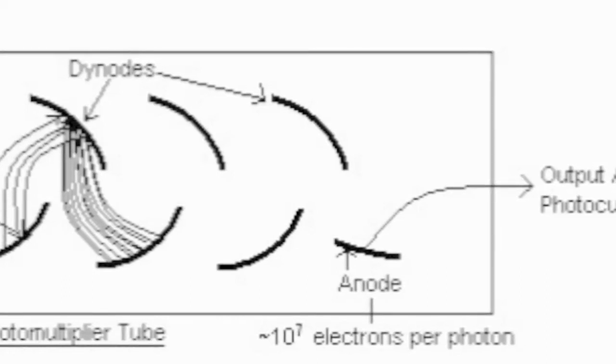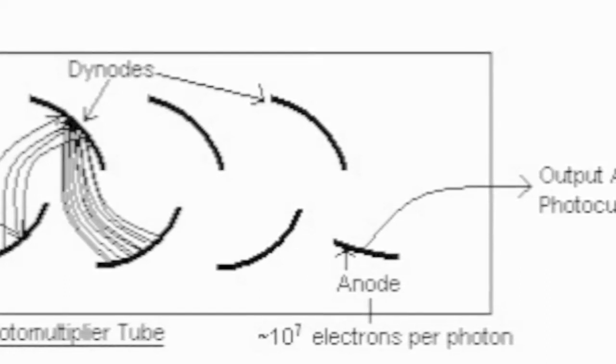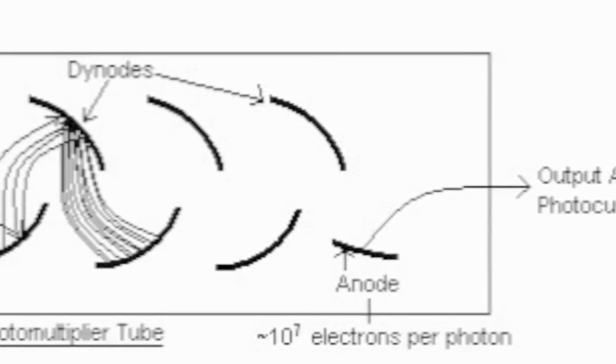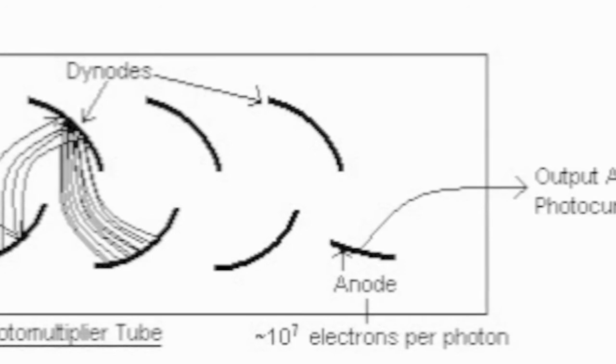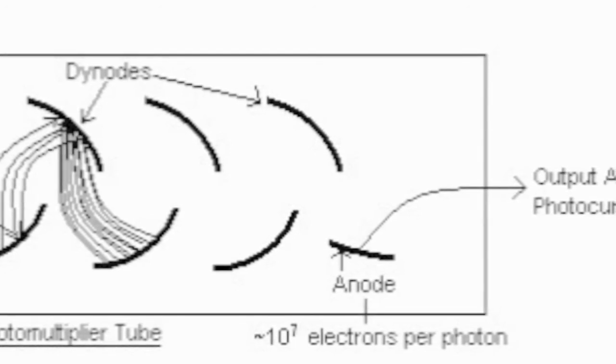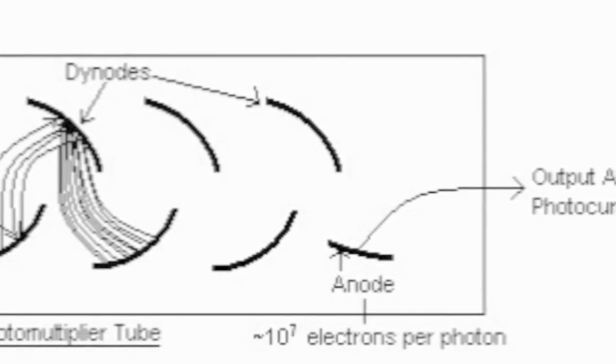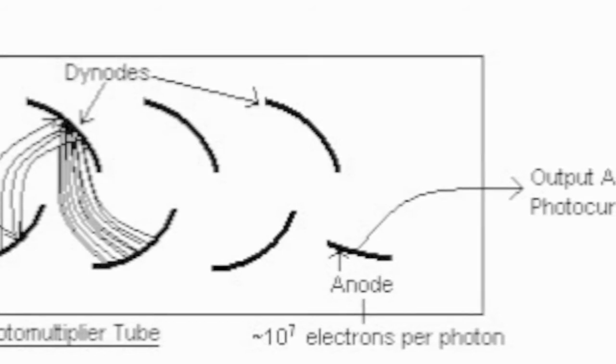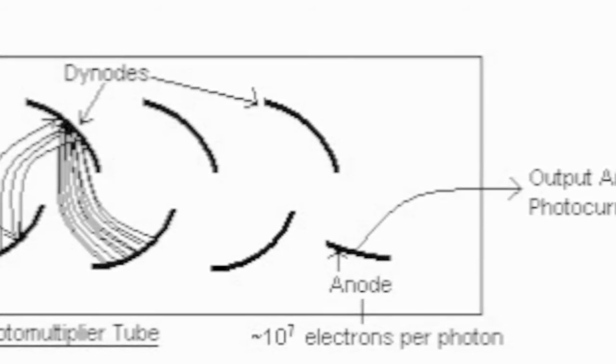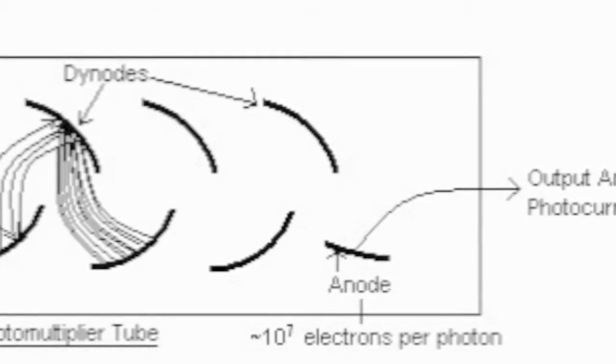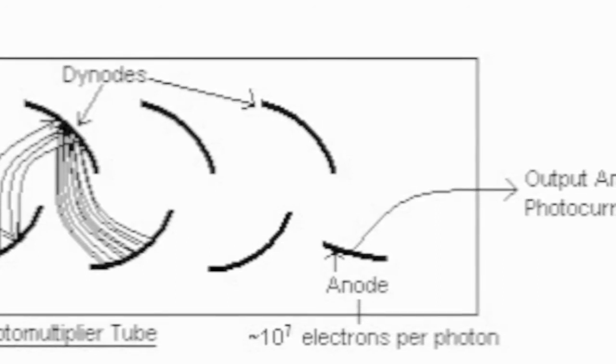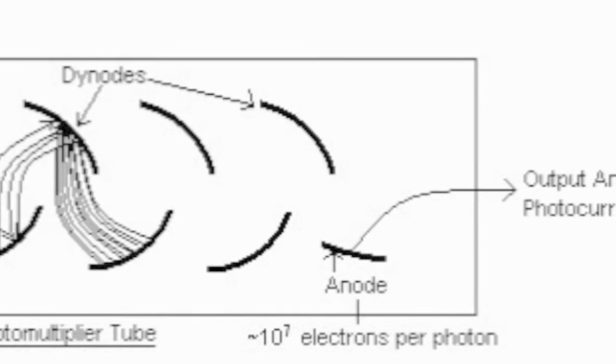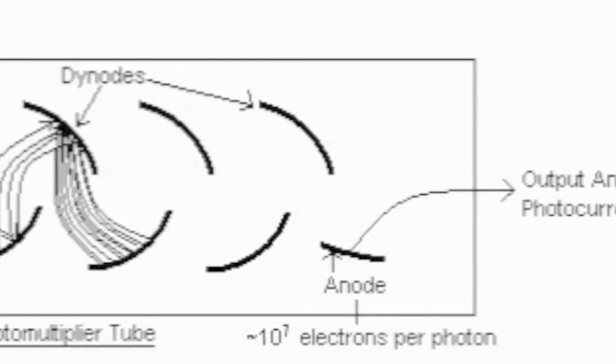The way this actually works is that when the electrons hit the anode, they create an electric current in the anode. This is because electric current is actually the flow of electrons. Voltage is potential and current is actual work. Current is directly proportional to the amount of electrons flowing, so the more electrons flowing, the higher current.